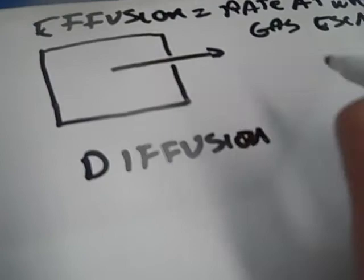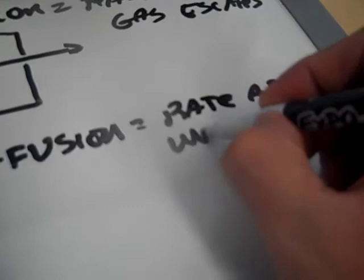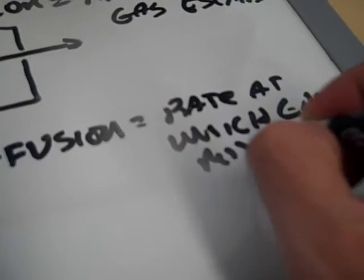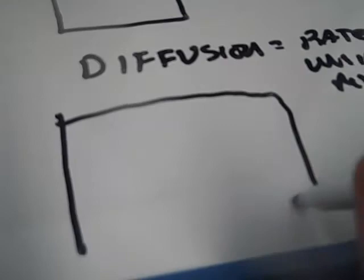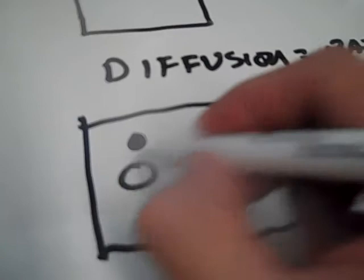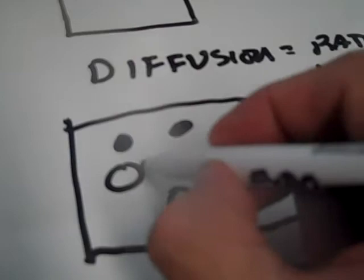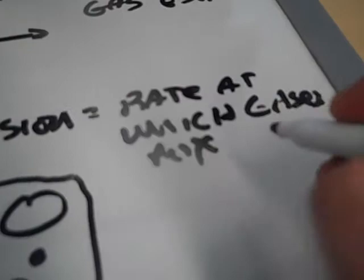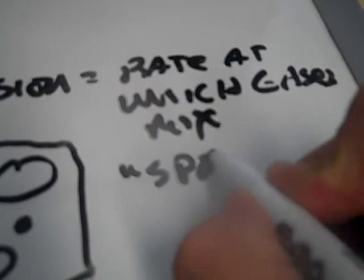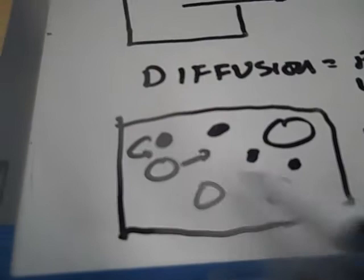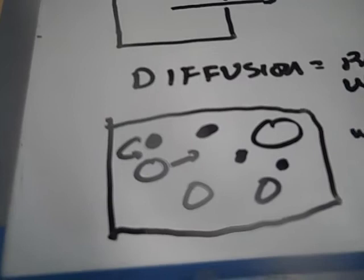Diffusion is something different. Diffusion is the rate at which gases mix. So let's say you have a container with one kind of gas and another kind of gas. Remember the kinetic model of matter — you have molecules that move about. The rate at which gases mix together is called spontaneous mixing.